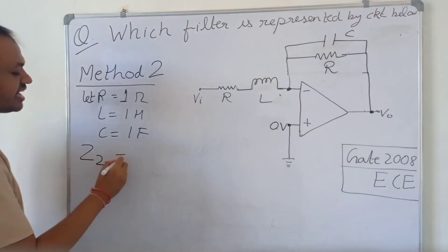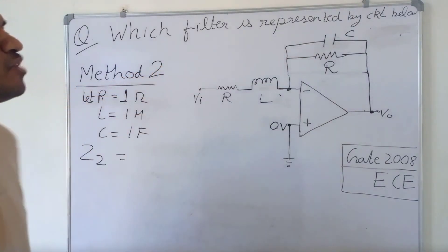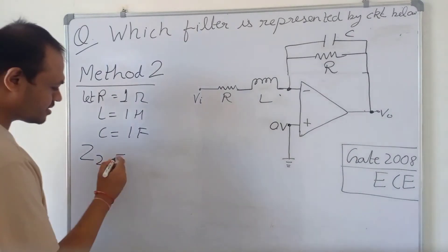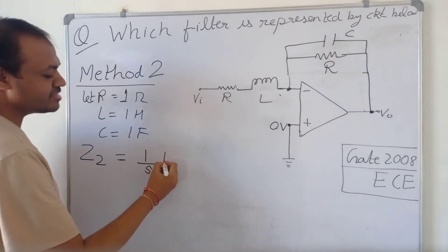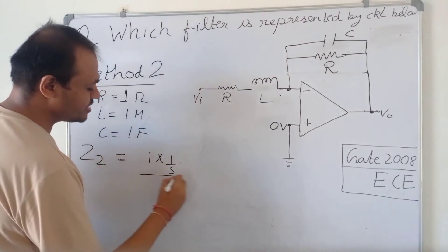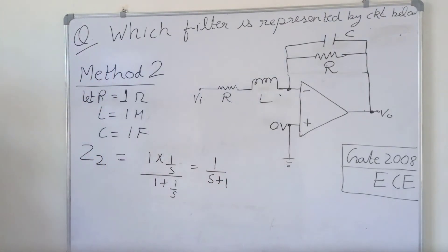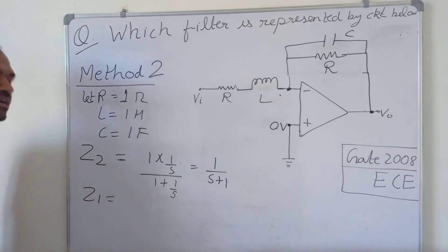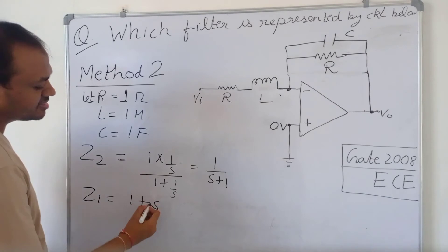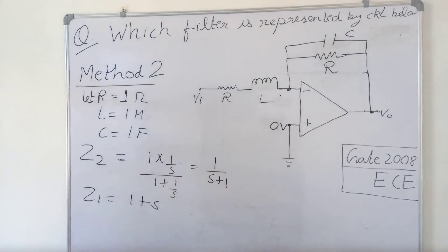Let Z₂ be the impedance of the parallel combination of C and R. The impedance of the capacitor is 1/S and the resistance of R is 1, so Z₂ equals (1/S) in parallel with 1, which gives Z₂ = 1/(S+1). And let Z₁ be the impedance of the series combination of R and L. Since L = 1 henry, its impedance is S and resistance is 1 ohm, so Z₁ = 1 + S.